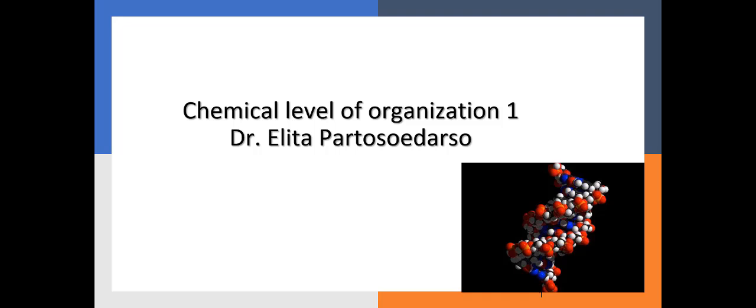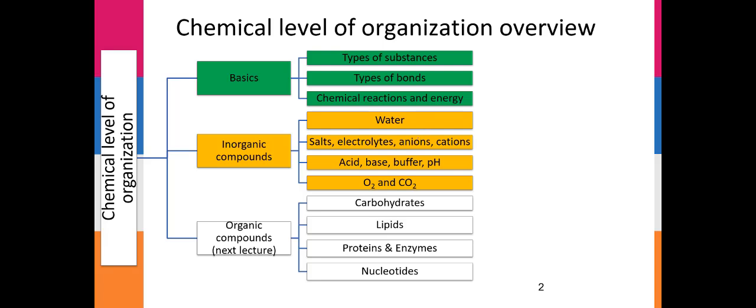This is the recording to accompany the slides for the first of two lectures on the chemical level of organization of the human body. The second slide gives an overview of the lecture. In part one, we're going to talk about these items, and the second lecture is going to talk about organic compounds. Today we cover the basics of the chemical level of organization, focusing on inorganic compounds.